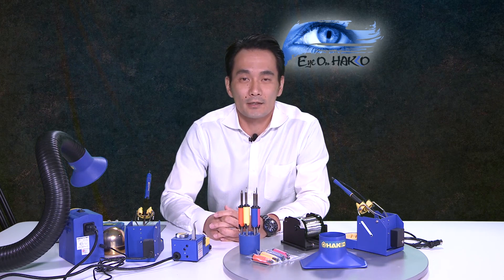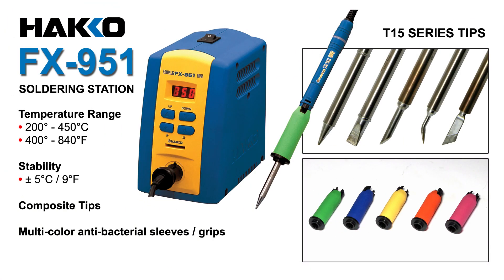For the FX-951, you can set the temperature from 200°C to 450°C. The tip series you'll be able to use are called T-15 series tips. There are over 50 different tip shapes you can use, including conical, chisel, bent J-tips, knife tips, tunnels, spatulas—you name it. We have a wide selection for any application.